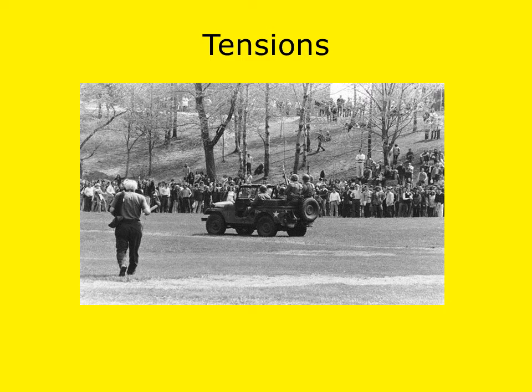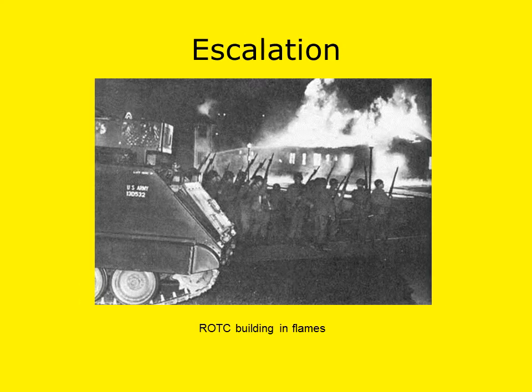Rumors emerged that the ROTC building was going to be a target of militant students. The mayor alerted the Ohio National Guard, but did not tell Kent State University officials of changes in security and of the reported terror threats. An anti-war march began approximately 8 p.m. on Saturday evening. Many windows were broken on Main Street, and someone set fire to the ROTC building, which you can see in the image accompanying this slide. Fire personnel arrived, but students attacked firemen and their equipment. Police surrounded the destroyed ROTC building and used tear gas to disperse the students.